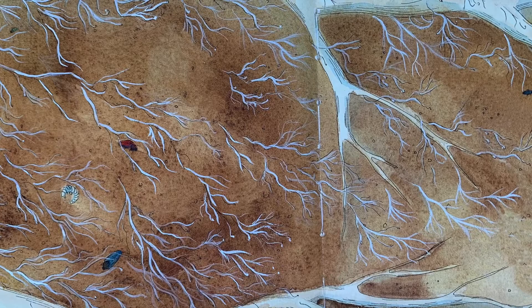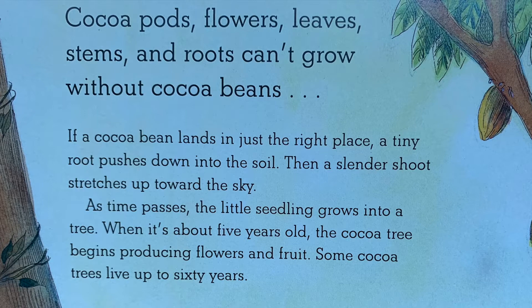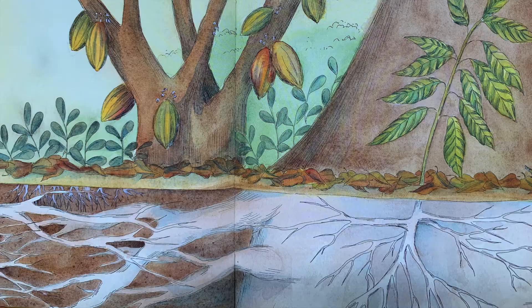Cocoa pods, flowers, leaves, stems and roots can't grow without cocoa beans. If a cocoa bean lands in just the right place, a tiny root pushes down into the soil. Then a slender shoot stretches up toward the sky. As time passes, the little seedling grows into a tree. When it's about five years old, the cocoa tree begins producing flowers and fruit. Some cocoa trees live up to 60 years.